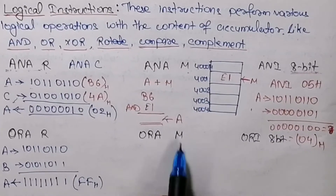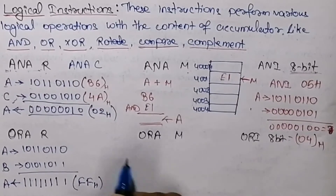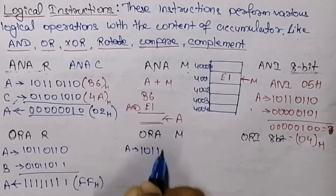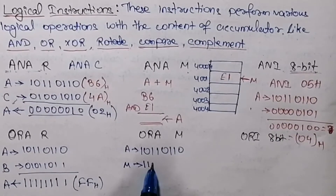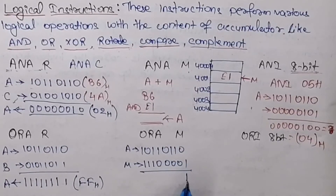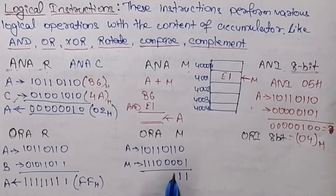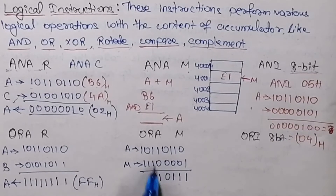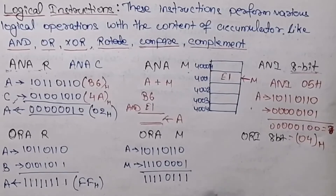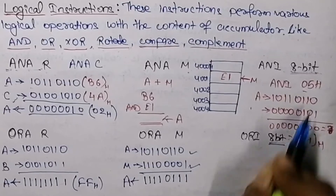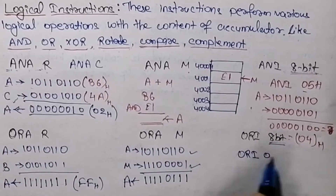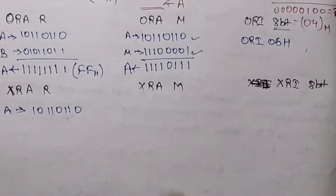In the same way, we can perform the OR operation with the content of memory. For example, accumulator content 10110110 OR'd with memory content E1 (11100001) gives us the bitwise OR result, which is stored in the accumulator. Similarly, for ORI with an 8-bit value like 05h, you can perform the operation the same way.